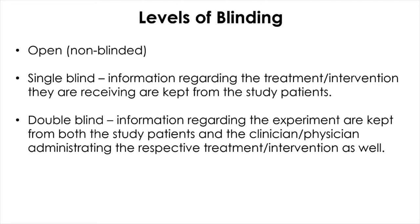An open randomized controlled trial is a non-blinded RCT, whereas a single-blinded RCT keeps information regarding the experiment from either the patients or the experimenter. Double-blinded is the most secure level of blinding, keeping information from both the participants and the experimenter.